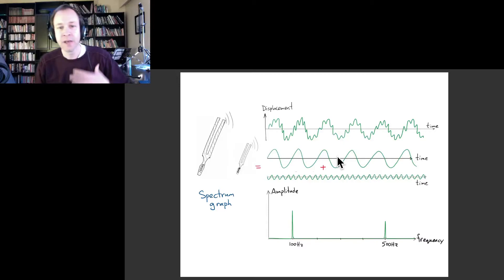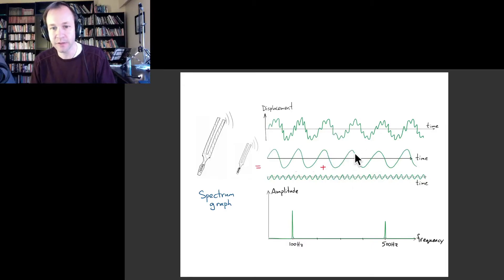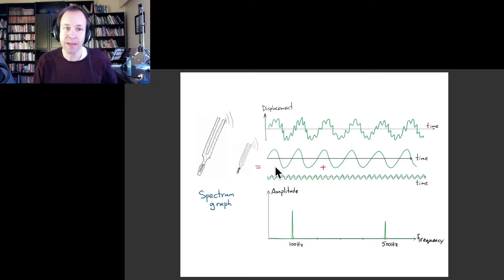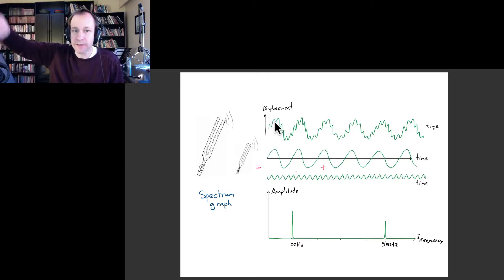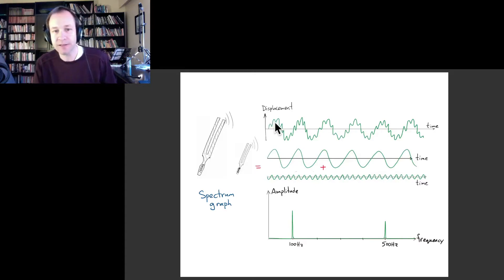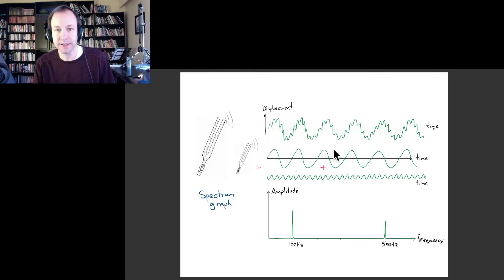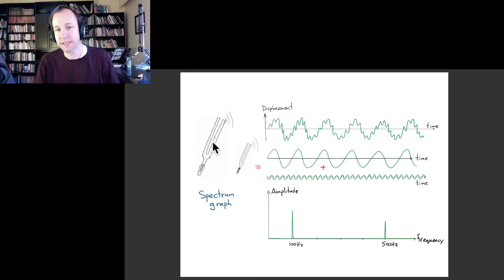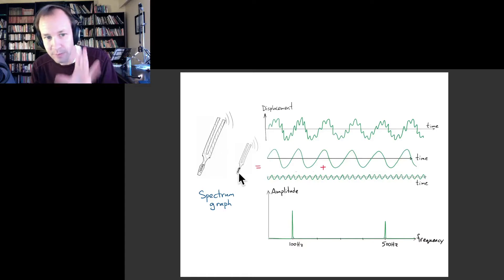The way to understand the combined graph is as the mathematical sum of these two graphs — at every point, you just add up the value of this one and the value of this one. We can recognize that the amplitude of the smaller wiggles is a little bit smaller than the amplitude of these big wiggles, which is why it more or less still looks like an up-and-down curve with little wiggles on it. So we can conclude that the 100 hertz tuning fork was being sounded at a larger amplitude — it's probably a little bit louder than the 500 hertz tuning fork.